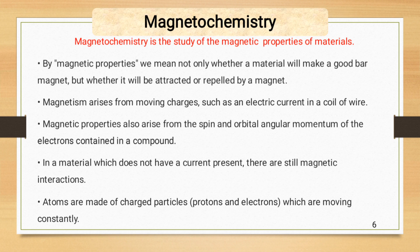Magnetism arises from moving charges, such as electric current in a coil of wire produces a magnetic field around itself. Magnetic properties also arise from the spin and orbital angular momentum of the electron contained in a compound or an atom.